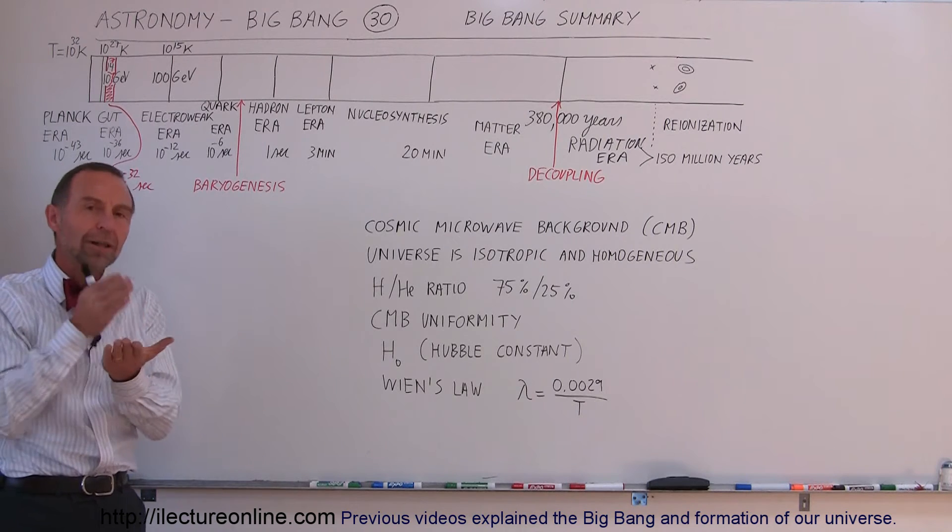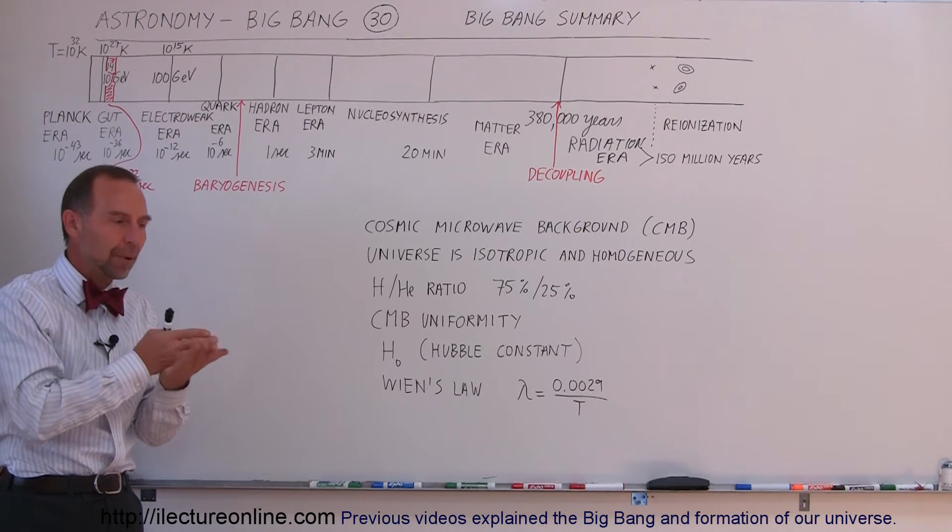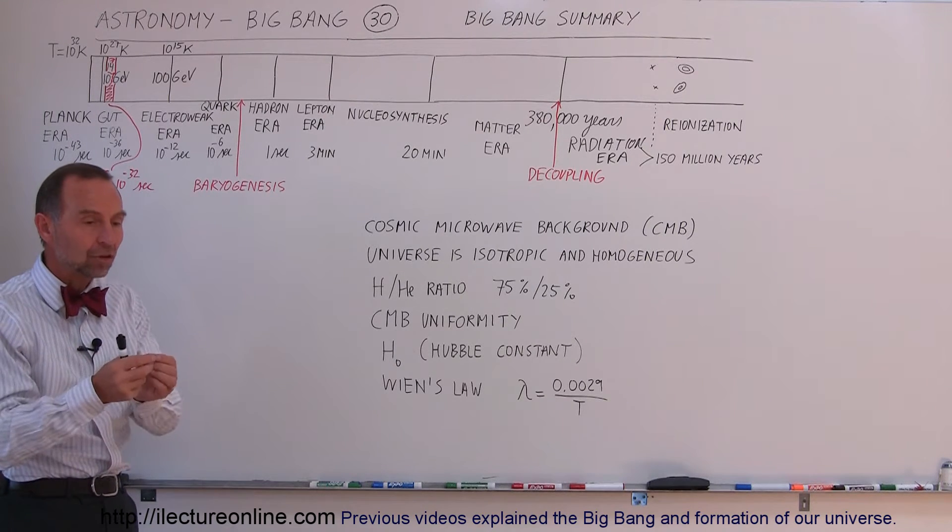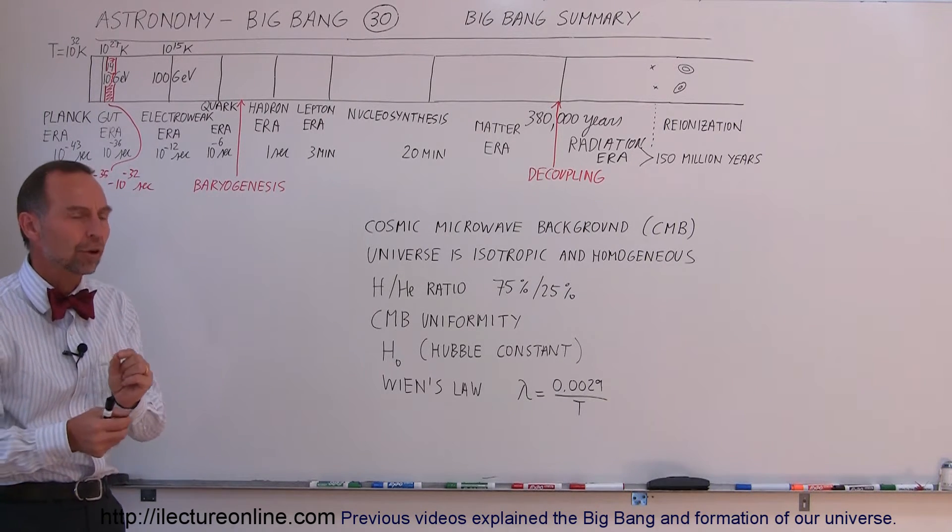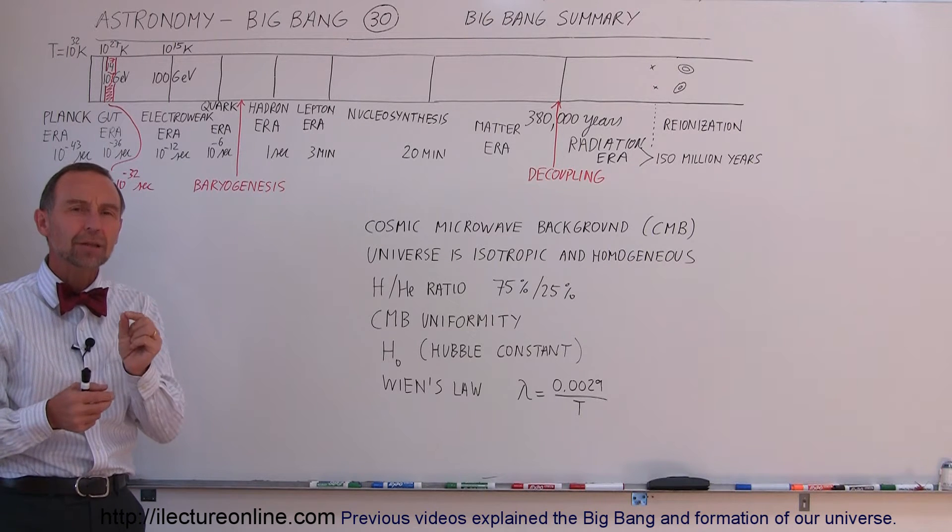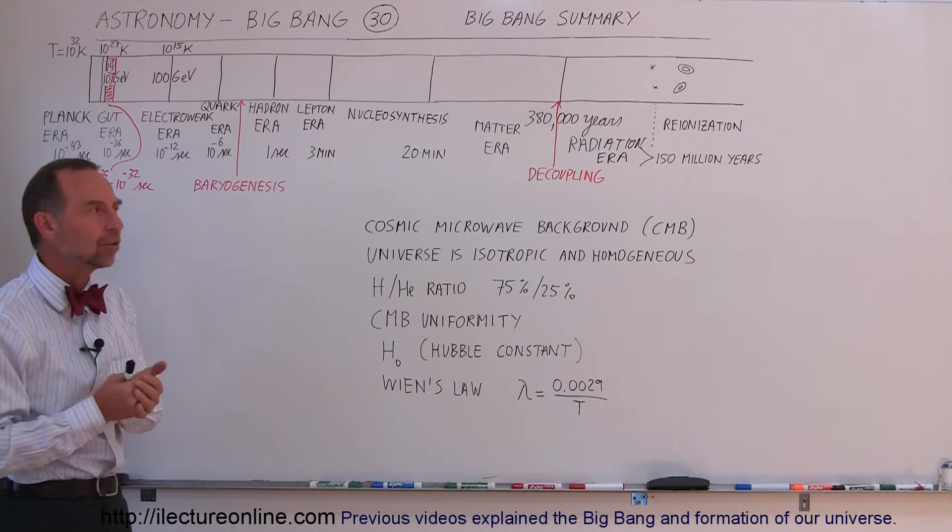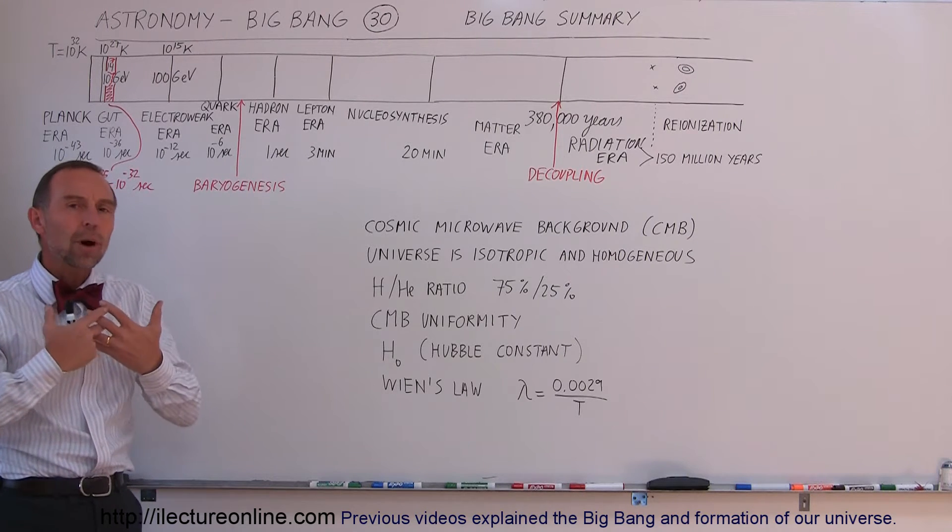But for some reason, a small excess of the particles existed beyond the antiparticles. So when they all annihilated each other, there would be a small amount left over. Roughly about one in a billion of these particles would have been left over after they recombined and annihilated each other. And so we really don't know how that happened.